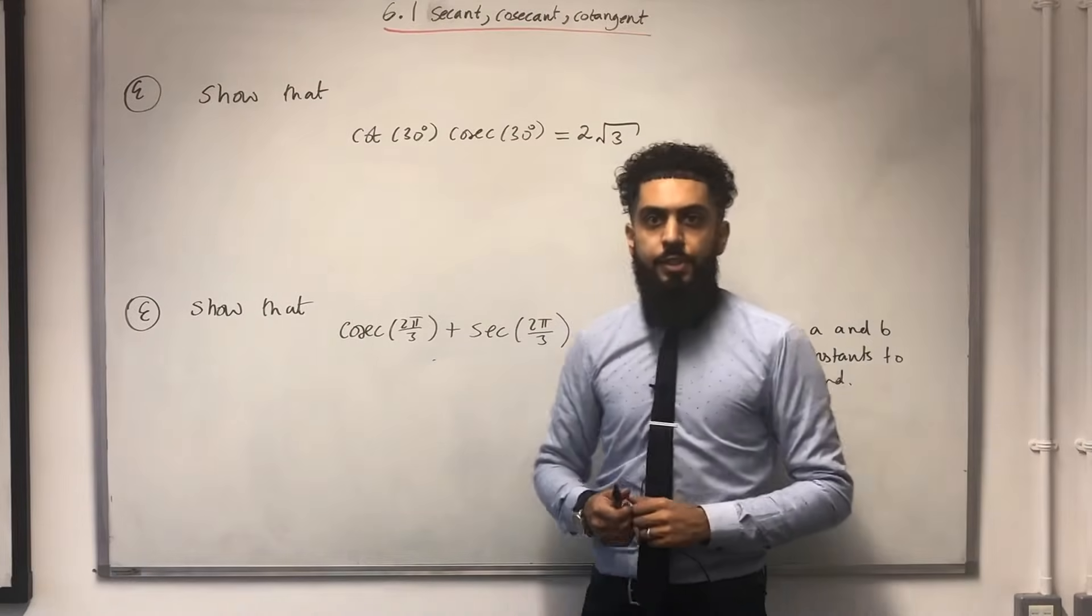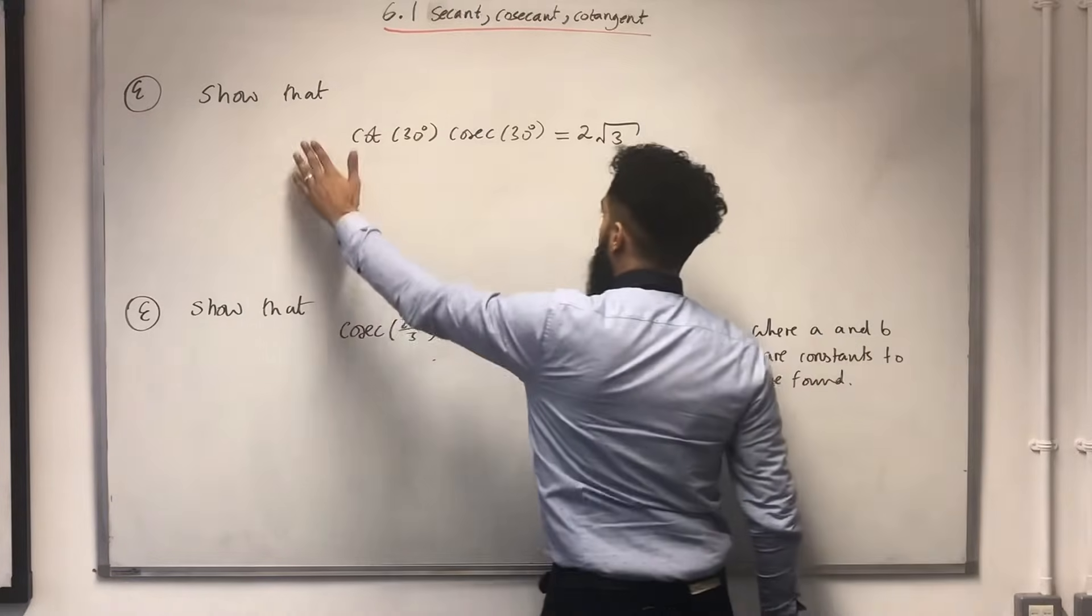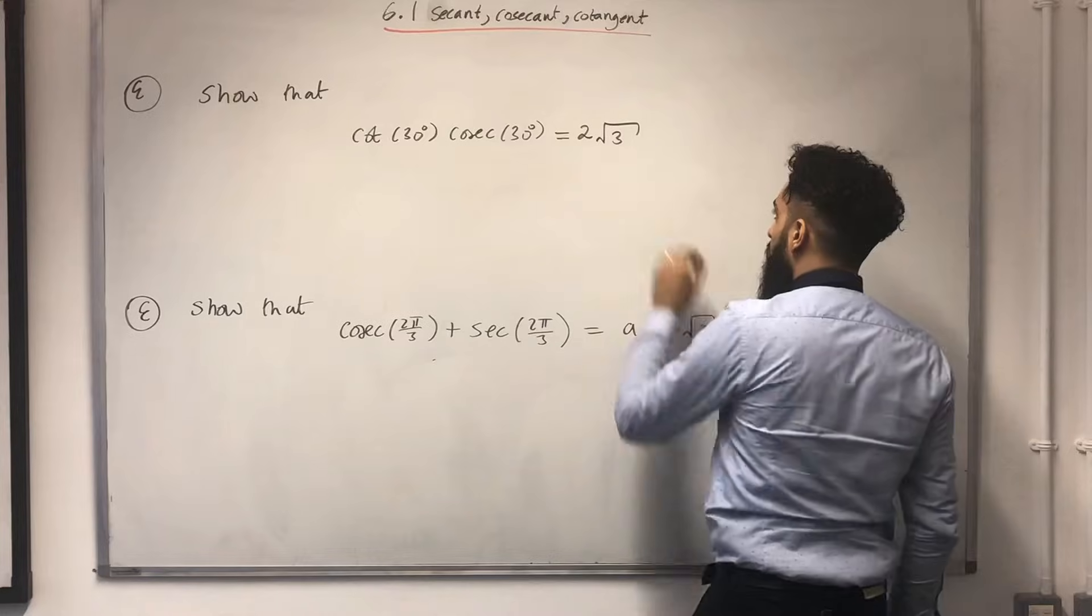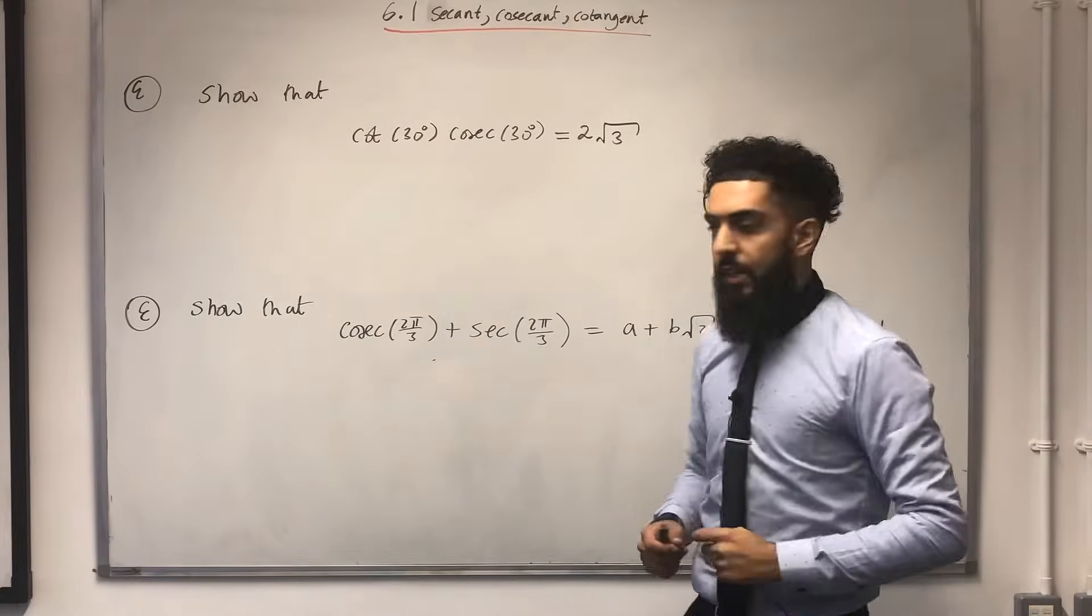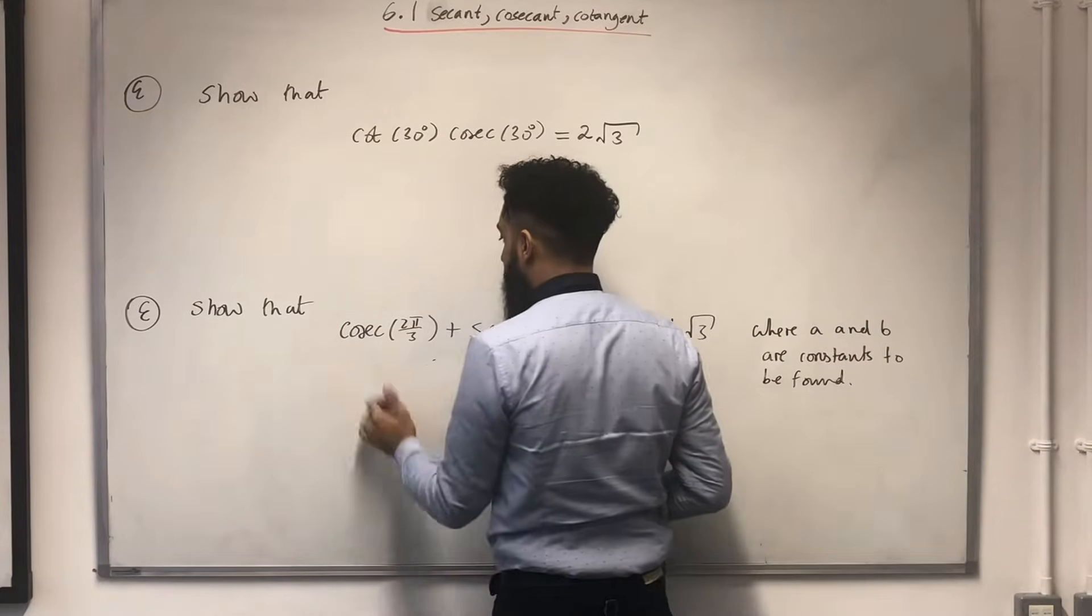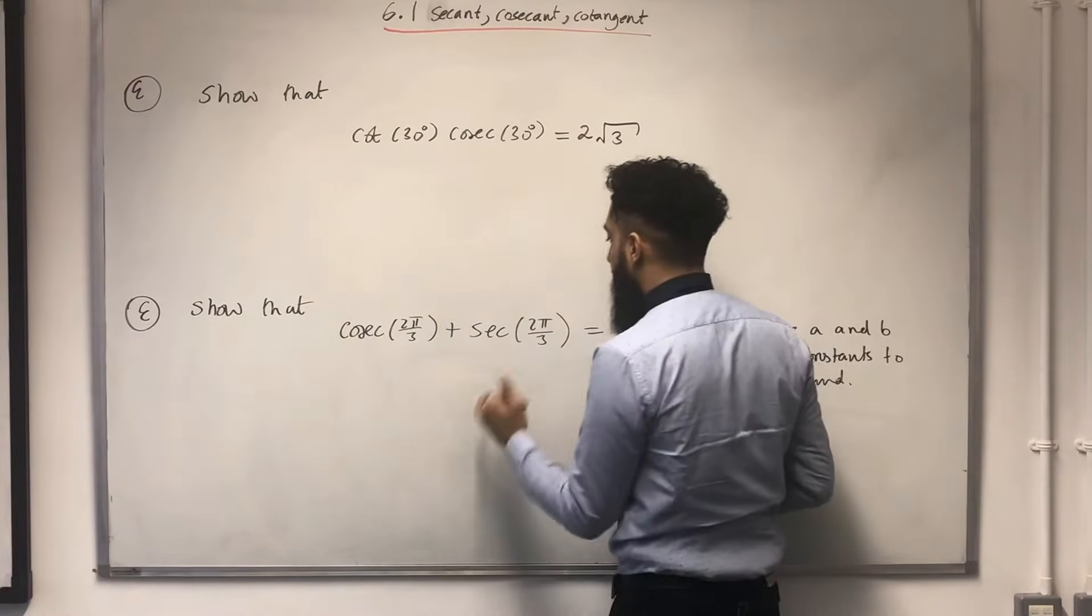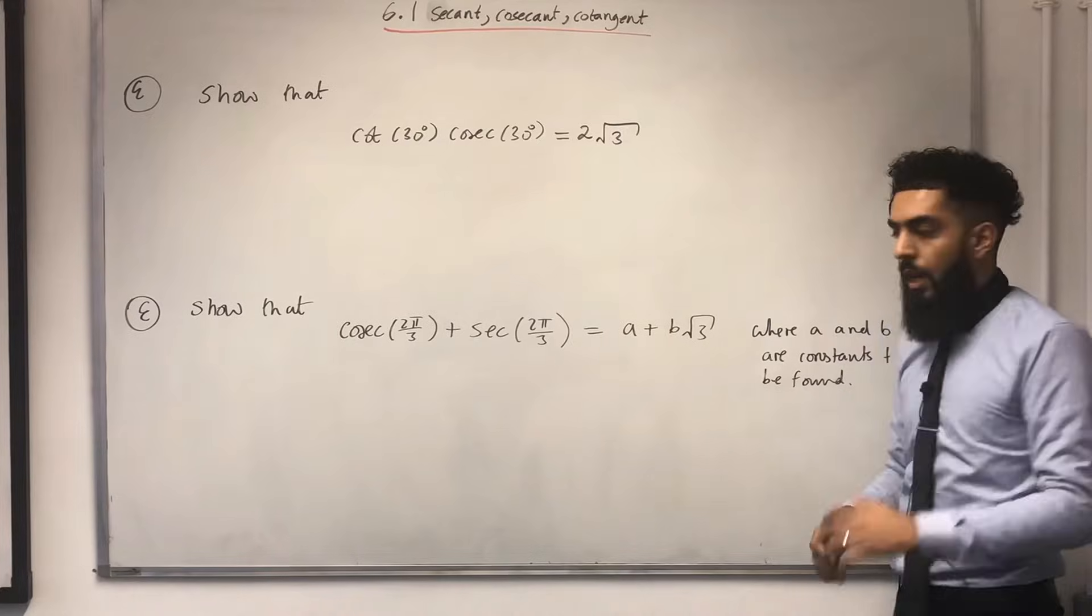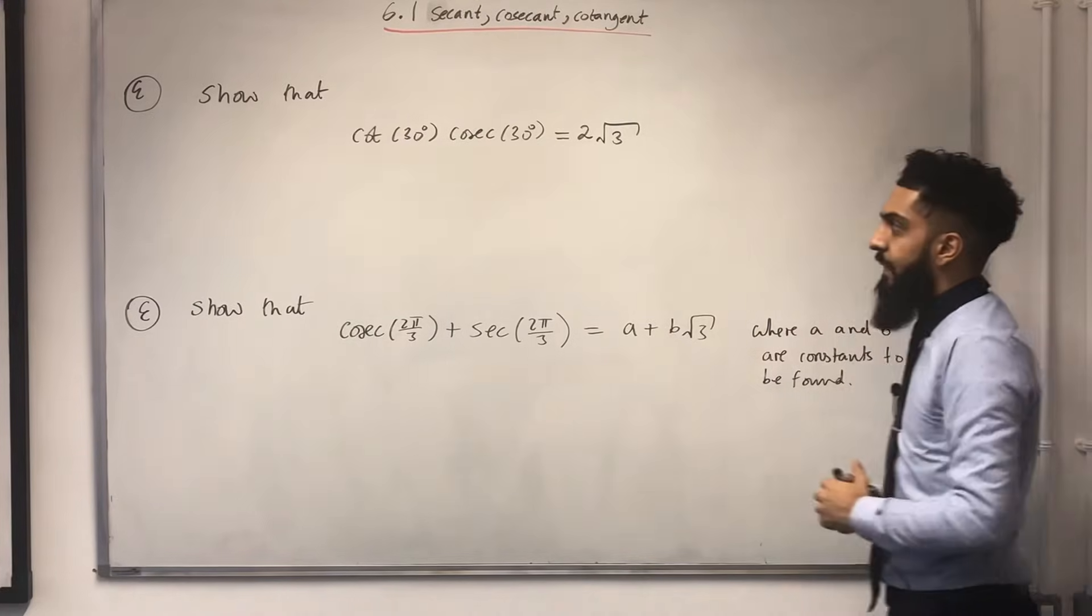Here are two exam questions. The first one says, show that cot 30° multiplied by cosec 30° is equal to 2√3. Second exam question says, show that cosec(2π/3) plus sec(2π/3) is equal to a plus b√3, where a and b are constants to be found.